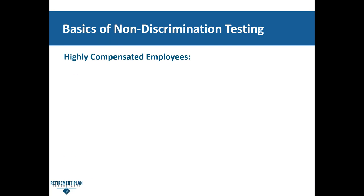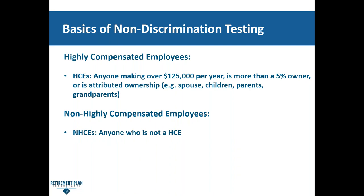Now I'm going to get into the basics of plan design and what some of this terminology means. The first group of employees you'll hear referred to is highly compensated employees. A highly compensated employee is anyone making over $125,000 per year and is also a greater than 5% owner, or through attribution is a family member of the owner — that would be a spouse, children, parents, and grandparents. That's going to be one of the two groups within the discrimination testing.